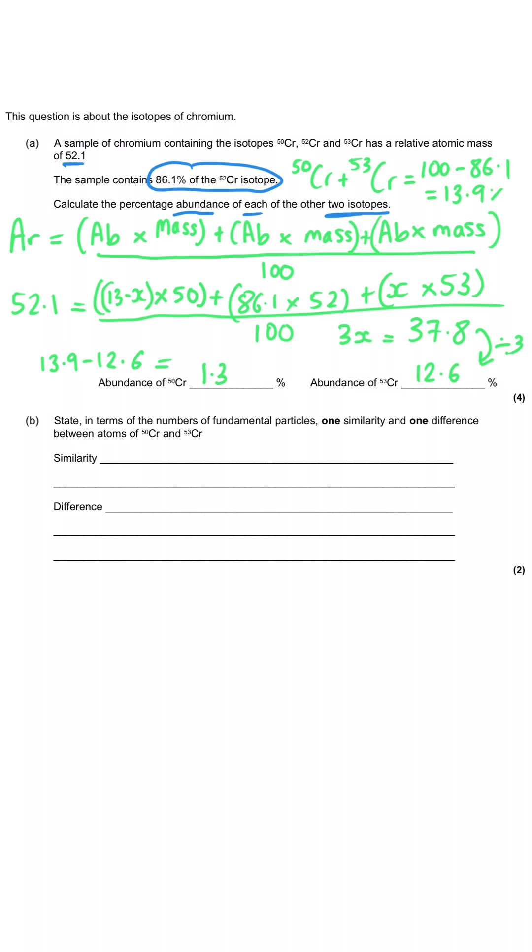Now there was no reason at all why we had to declare x as being the abundance of chromium-53 - we could have had chromium-50 being the x abundance, and if we'd done that we would have found out that 3x was equal to 3.9%, and so x is equal to 1.3%, just in exactly the same way that we've got here. And then we subtract 13.9 minus 1.3 which gets us our 12.6%, so you arrive at the same answer whichever form you choose to do.